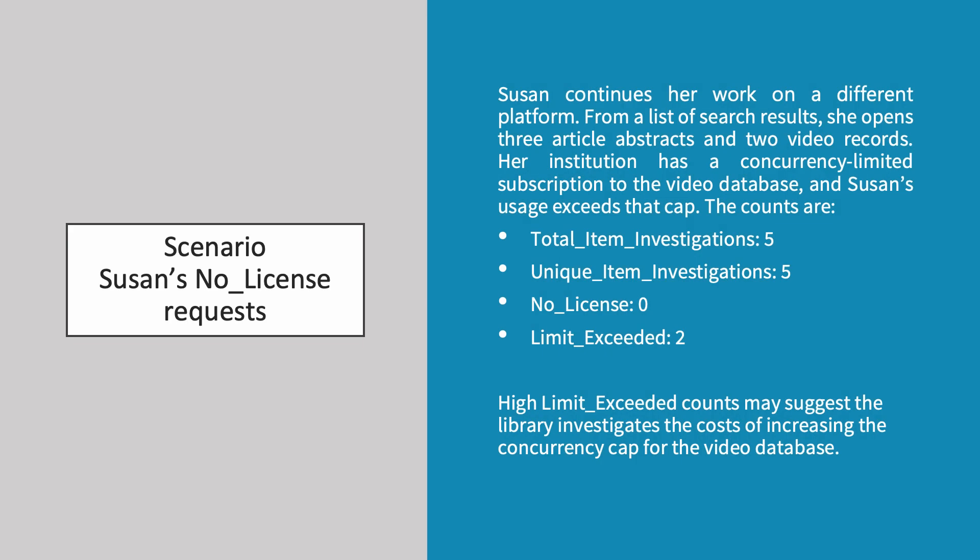Susan continues her research on publisher platform Beta. From a list of search results, she opens three article abstracts and two video records. Her institution has a concurrency limited subscription to the video database and Susan's usage exceeds that cap. The counts are therefore 5 total item investigations, 5 unique item investigations, 0 no license and 2 limit exceeded. A high limit exceeded count may suggest that the library should investigate the cost of increasing the concurrency cap for the video database.